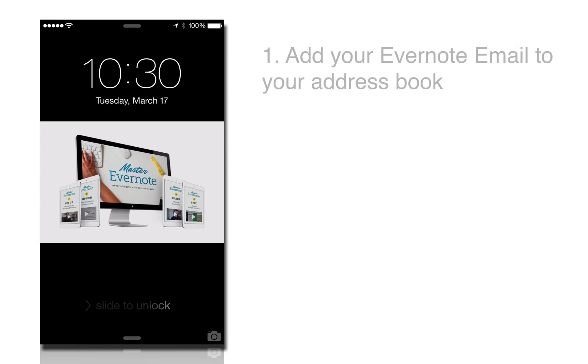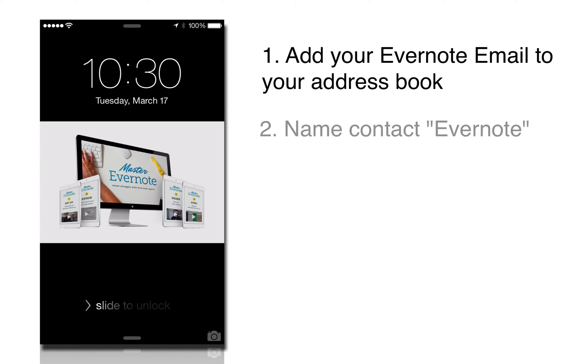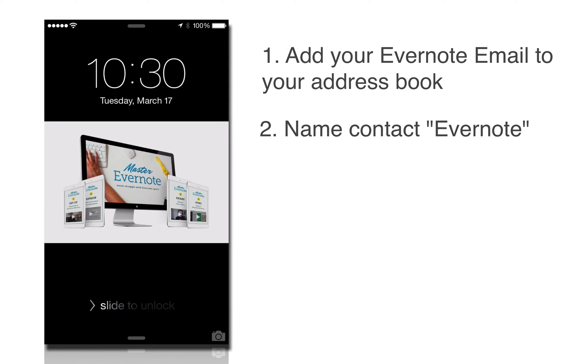One of the best ways to get a blog post into your Evernote is using audio, and this is a different way that you can do that using Siri. So with Siri you can send an email, so you just want to add your Evernote email address. You want to create a new contact in your iPhone or device that is just called Evernote, and then you can send emails to them.